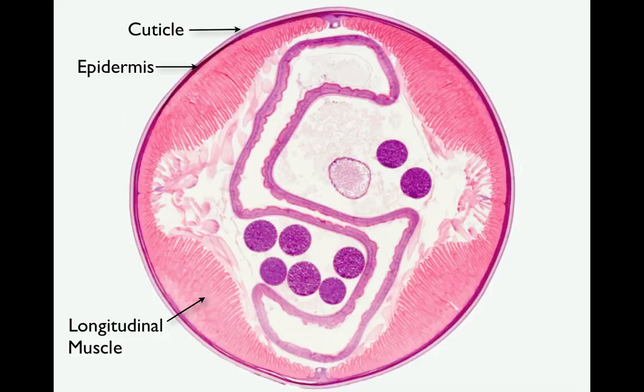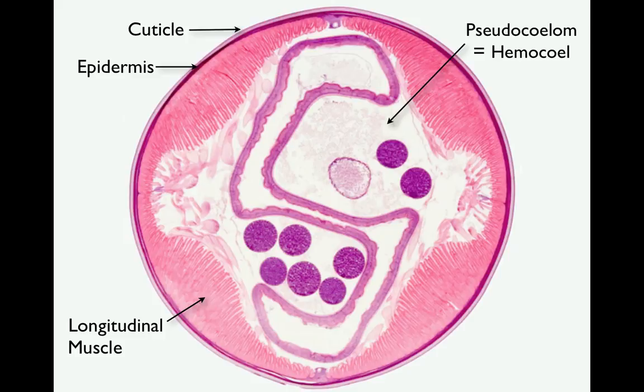The large open space that you can see in the center, the white area, is called the pseudocoelom, or hemocele, or more generally referred to as the body cavity. It is called the hemocele because this serves as the circulatory system, distributing nutrients and gases, as well as being the cavity in which the body organs are located.